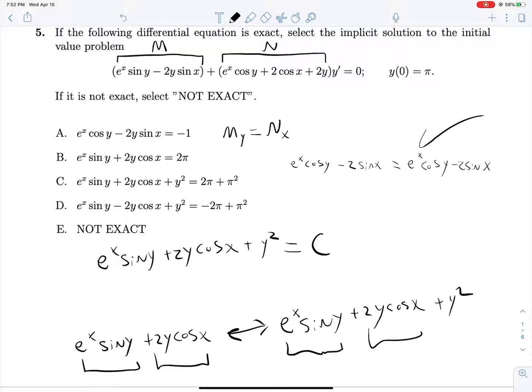We're told that y at 0 is equal to pi, so we can solve for c that way. x is 0, y is pi, so this term will go to 0 because sin of pi is 0. Cosine of 0 is 1 times 2pi is 2pi, and this is pi squared. So our c is equal to 2pi plus pi squared. And that is that for that.